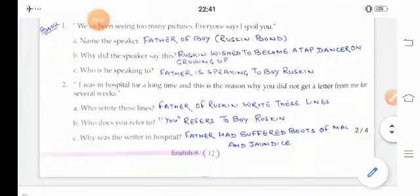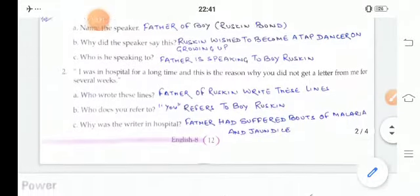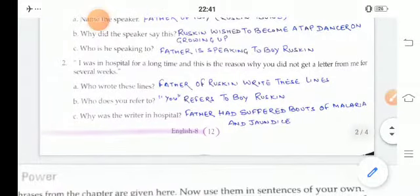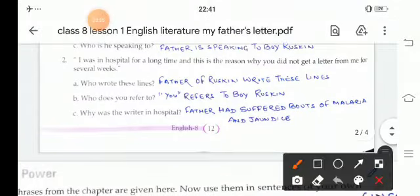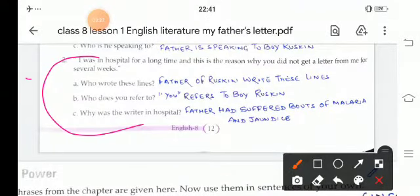Then, I was in hospital for a long time and this is the reason why you did not get a letter from me for several weeks. Who wrote these lines? Father of Ruskin wrote these lines. Who does 'you' refer to? You refers to boy Ruskin. Why was the writer in hospital? Father had suffered bouts of malaria and jaundice.